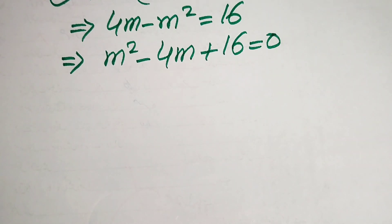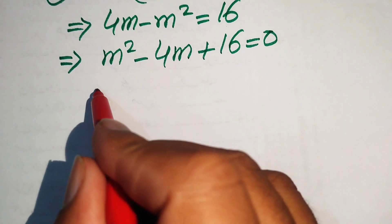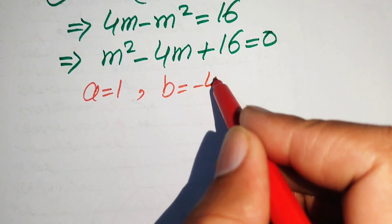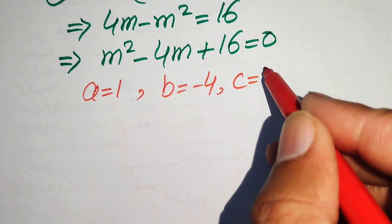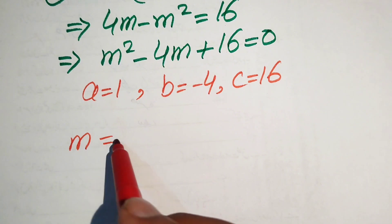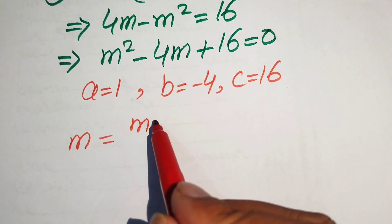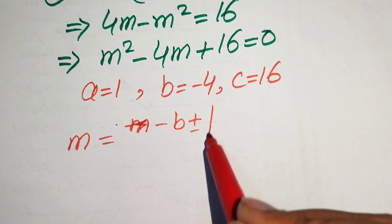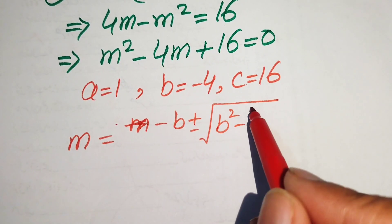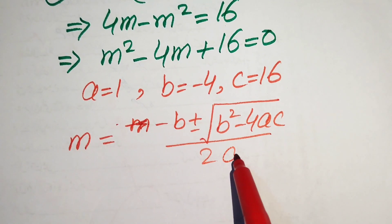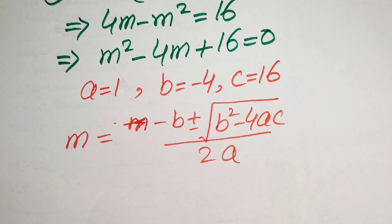We solve this quadratic equation using the quadratic formula. The coefficients are: a equals 1, b equals minus 4, and c equals 16. The quadratic formula is m equals minus b plus or minus square root of b squared minus 4ac, divided by 2a.